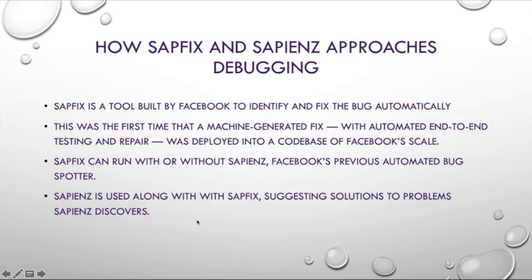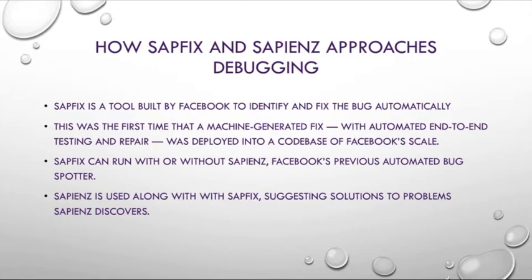Sapfix is another tool developed by Facebook. It scans the code, automatically identifies bugs, tests different patches, and suggests the best ones that engineers can choose to implement. Facebook previously used an automatic bug spotter tool called Sapience. Sapfix can be integrated with Sapience so that Sapience is used to discover problems and Sapfix suggests solutions to those problems.